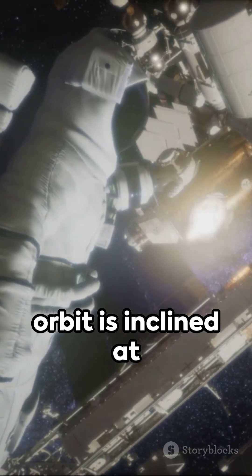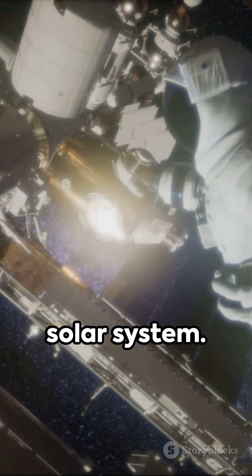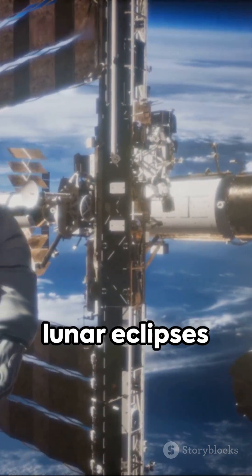Fourth, Earth's orbit is inclined at an angle of approximately 7 degrees relative to the plane of the solar system. This inclination allows for unique celestial events such as solar and lunar eclipses.